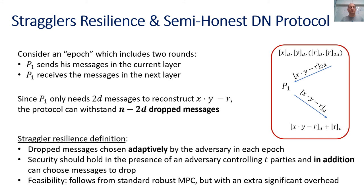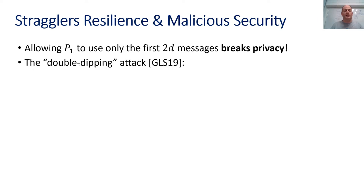In the paper we give a formal definition for straggler resilience allowing the adversary to choose adaptively which messages to drop in each epoch, and also require security to hold in the presence of both corrupted parties and dropped messages. The feasibility of straggler resilience follows from standard robust MPC protocols, but there it comes with significant overhead. We are interested in straggler-resilient MPC without any additional overhead. While straggler resilience is straightforward with semi-honest security, it is much more challenging with malicious security — if we allow P1 to use only the first 2D messages it receives, this completely breaks the privacy of the protocol.